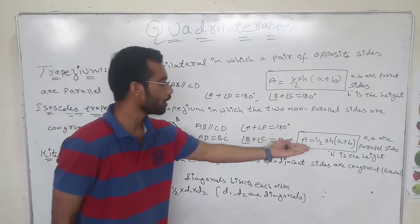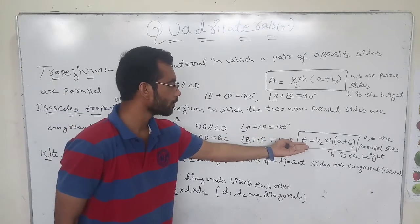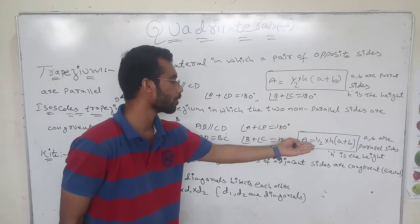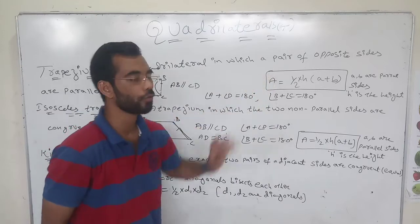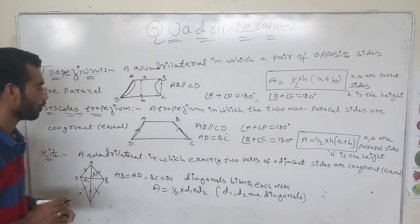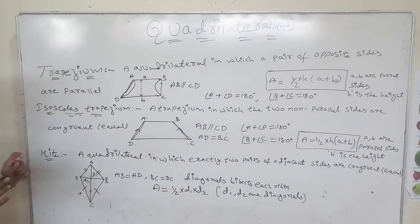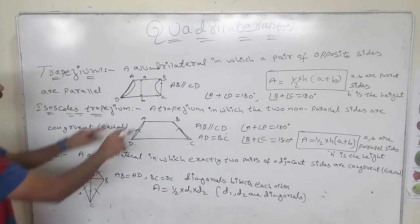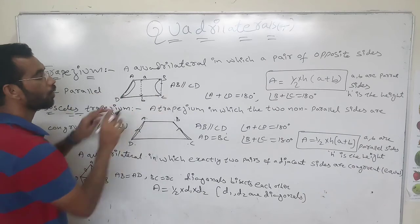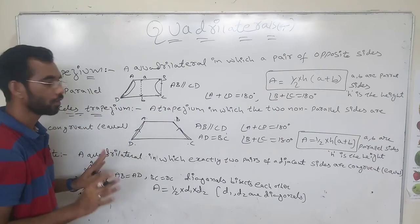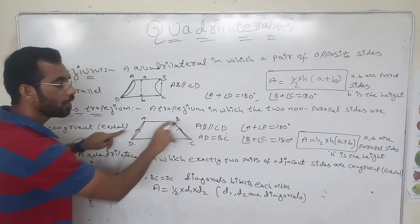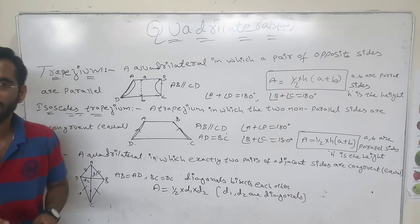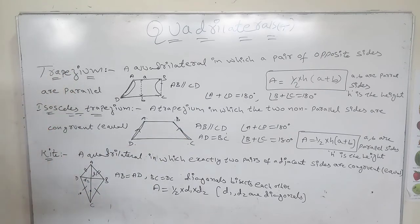The area formula is the same as that of the trapezium: area equals half into H into (A plus B). The only difference is that in the isosceles trapezium, the non-parallel sides are equal to each other.